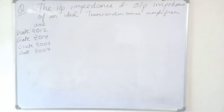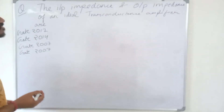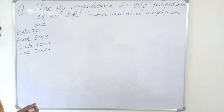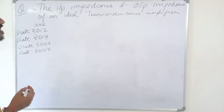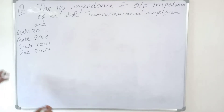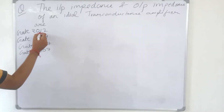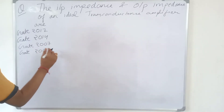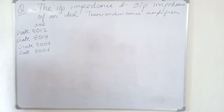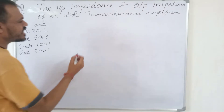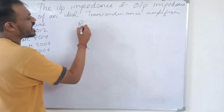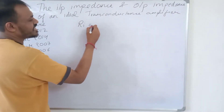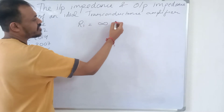In this video we will discuss the Ideal Transconductance Amplifier — specifically its input impedance and output impedance. This question is very common; it has been asked in GATE 2017, GATE 2014, GATE 2007, and GATE 2006 as well. Ideally, the input impedance Ri should be as large as possible, or infinite.